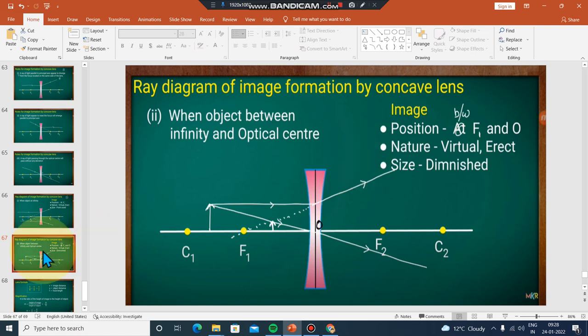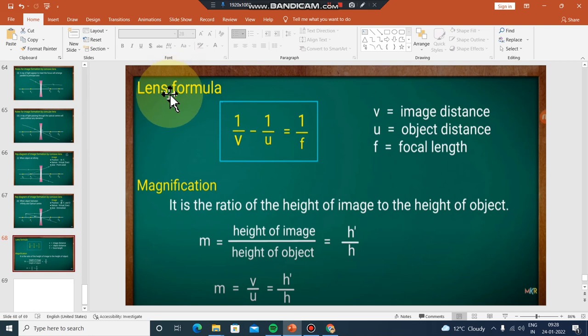Lens formula: 1/v - 1/u = 1/f, where v is image distance, u is object distance, and f is focal length. Magnification is the ratio of height of image to height of object: m = v/u = h_i/h_o.